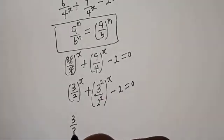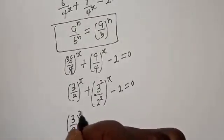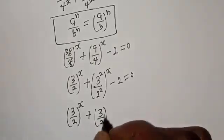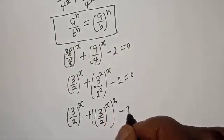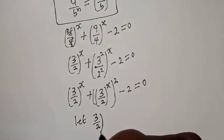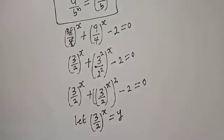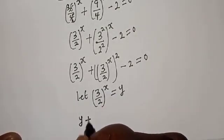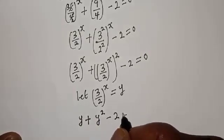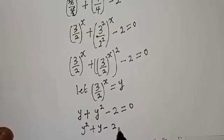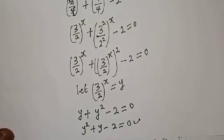This becomes 3 over 2 raised to the power of s plus 3 over 2 raised to the power of s, squared, minus 2 is equal to 0. Let y equal 3 over 2 to the power of s, so we get y plus y squared minus 2 equals 0. Rearranging, we have y squared plus y minus 2 is equal to 0. This is a quadratic equation which can be solved using either the factorization method or the quadratic general formula.